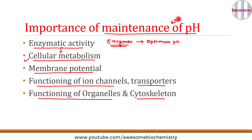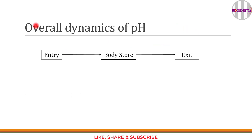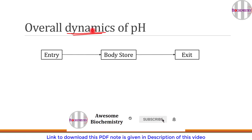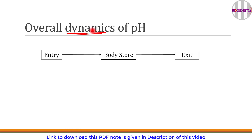Just as there is a body store for nutrients, vitamins, trace elements, and minerals like calcium, phosphate, magnesium, and iron — with entry and exit points that balance each other to keep the store fairly constant — the same dynamic applies to pH. We need to discuss the overall dynamics of pH.